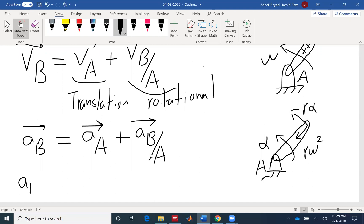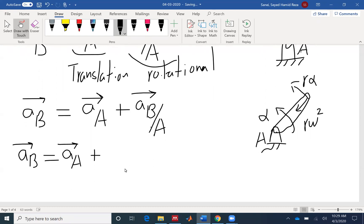So AB is AA, which for this example that I'm drawing is zero. But in general, acceleration at A is not zero. So we have the tangential component plus the normal component.